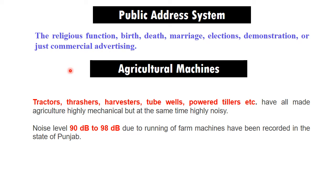Public address systems are mostly used at religious functions, births, deaths, marriages, elections, demonstrations, or commercial and advertising activities, creating noise particularly in daytime. Agriculture machines include tractors, threshers, harvesters, and tube-well powered rotavators, which have made agriculture highly mechanized, but at the same time these are highly noisy during operation. Noise levels of 90 dB to 98 dB due to running farm machinery have been recorded in the state of Punjab and other states of India, which is considered a discomfort to nearby farmers.